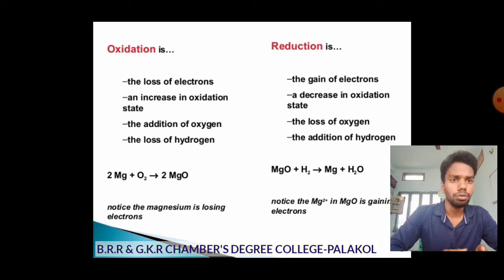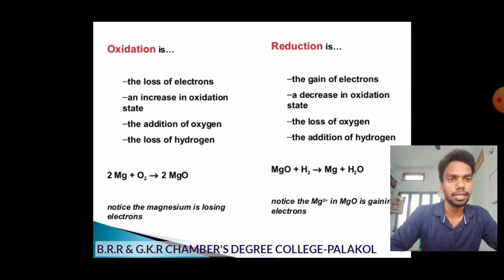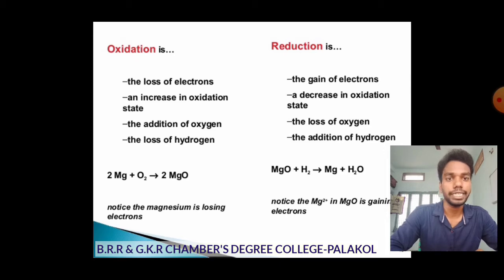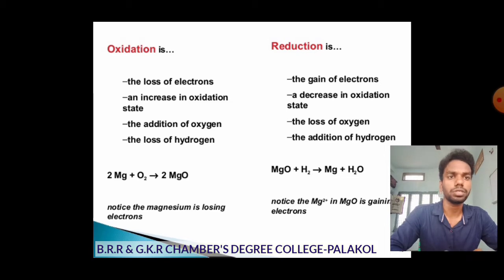Second example: MgO + H₂ → Mg + H₂O. In the reactant MgO, magnesium is +2. In the product, Mg is zero. So from +2 to zero, its oxidation state decreases, meaning Mg is gaining two electrons from hydrogen. Therefore Mg undergoes reduction in this reaction, whereas in the first case Mg underwent oxidation because its oxidation state increased.